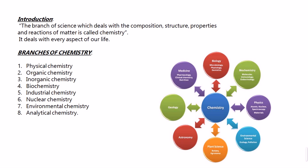Now let's look at the branches of chemistry. There are eight main branches: physical chemistry, organic chemistry, inorganic chemistry, biochemistry, industrial chemistry, nuclear chemistry, environmental chemistry, and analytical chemistry — which has major scope related to the environment and industries.